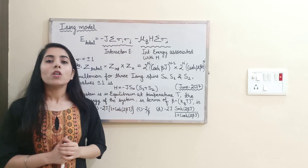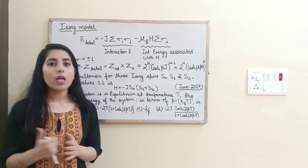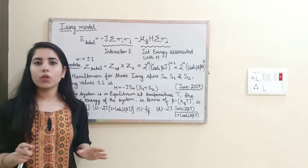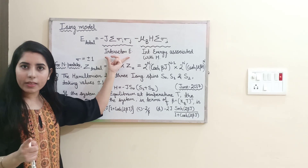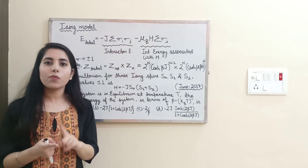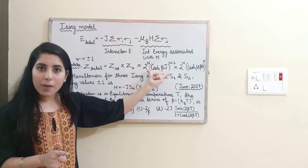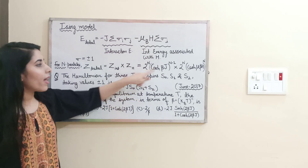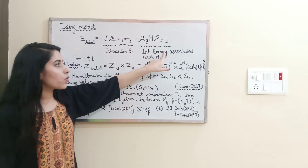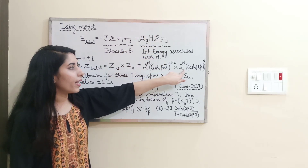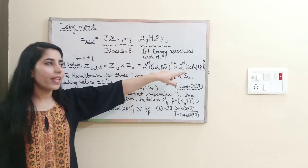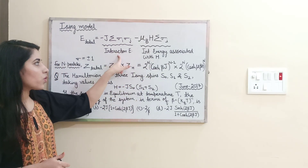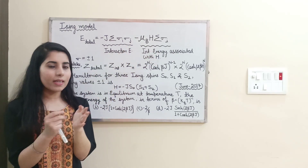We may also get questions based on the partition function related to the Ising model. For the interaction between particles (first term), the partition function for N particles is: Z = 2^N · cosh(βJ)^(N−1). For the magnetic field contribution (second term), the partition function is: Z = 2^N · cosh(μ_B βH)^N.